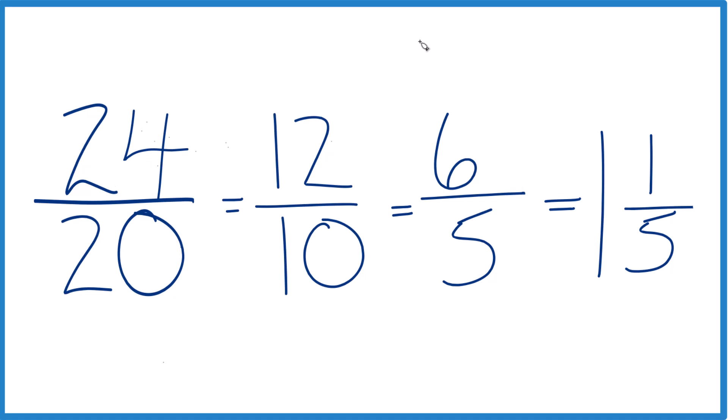And since 24 twentieths, we've simplified that to 6 fifths. 24 twentieths, that also equals the mixed number 1 and 1 fifth.